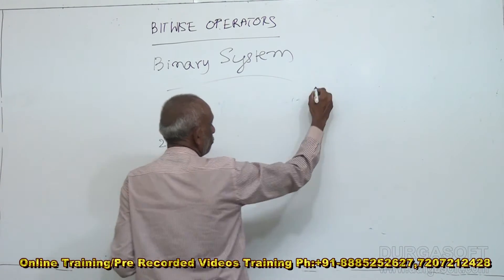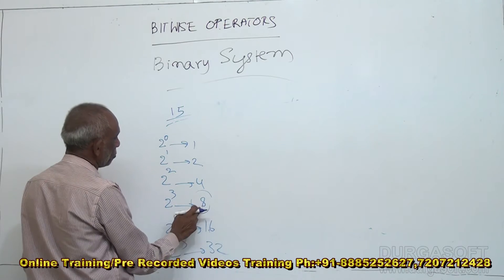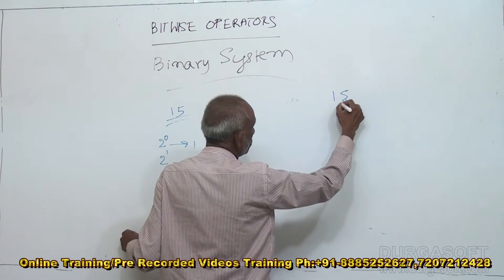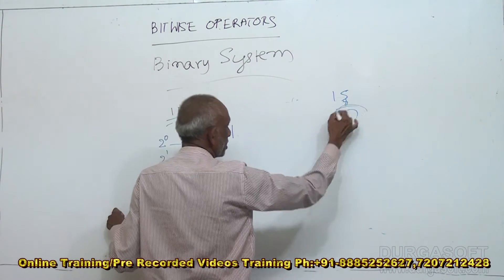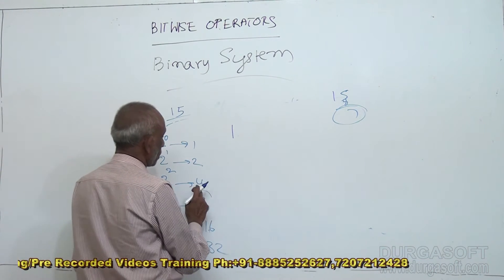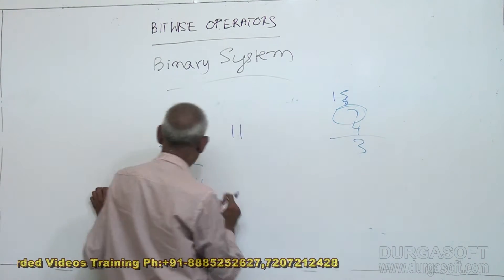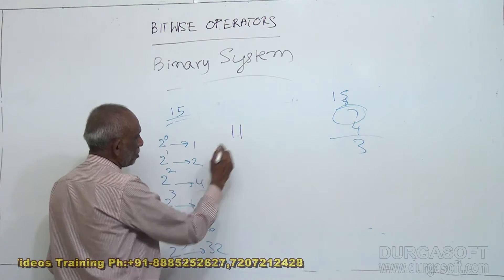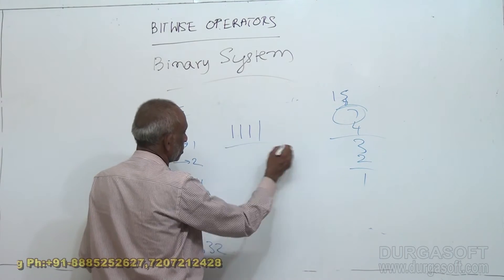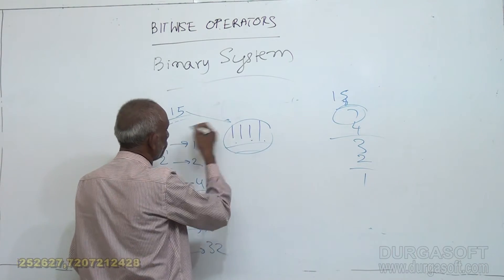We still have 7. Next, compare with 4. 4 is there, so put 1 and subtract 4, giving 3. Again go to 2. 2 is also there, so put 1 here and subtract 2, leaving 1. 1 is also there, so put 1. So 1, 1, 1, 1 is the binary equivalent of 15.